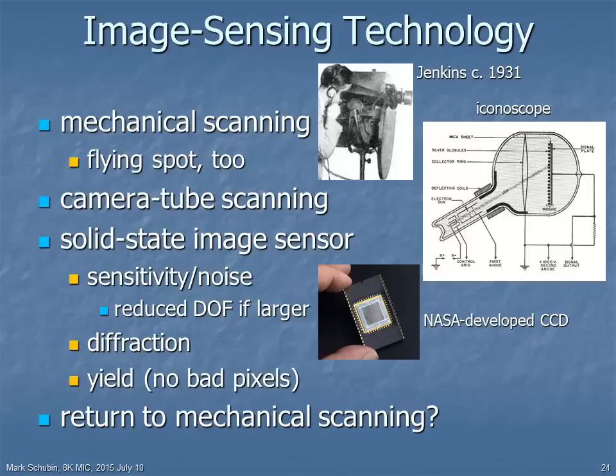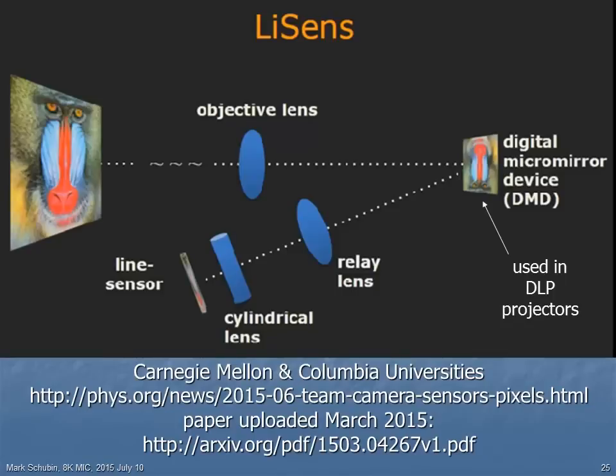Might we solve some of these problems by returning to mechanical scanning? This diagram shows some recent work done at Carnegie Mellon and Columbia Universities in the United States. A single-line image sensor is used — not an array, just a single line. The image is scanned by the rapidly tilting mirrors in a digital micromirror device, the same technology used in DLP projectors, digital light processing projectors, which are commonly used for digital cinema.